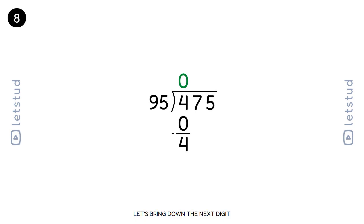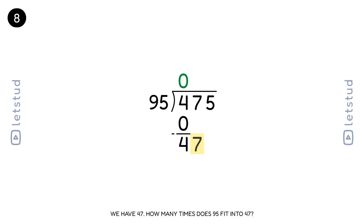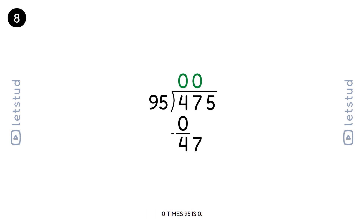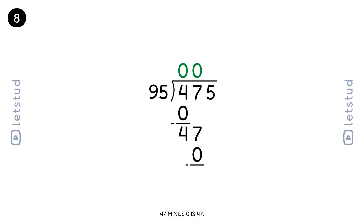Let's bring down the next digit. We have a remainder of 4 and bring down the 7 to make 47. 95 fits into 47 zero times. 0 times 95 is 0. 47 minus 0 is 47.